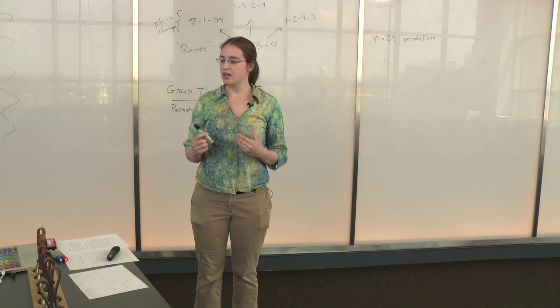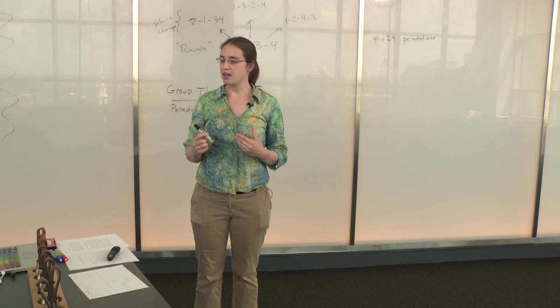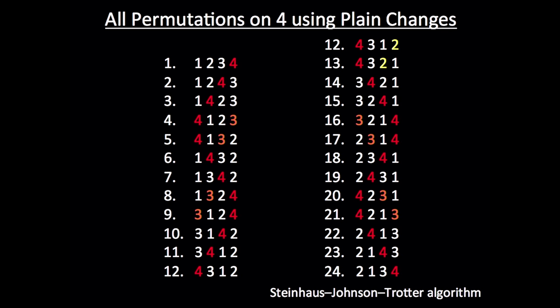The other thing to notice is that there are no repetitions. We hit every permutation once and only once. We don't ring any of them twice other than beginning and ending in the same place in rounds. And this is also a goal of change ringing, to ring as many permutations as we can, in some cases all of them, without repeating any.